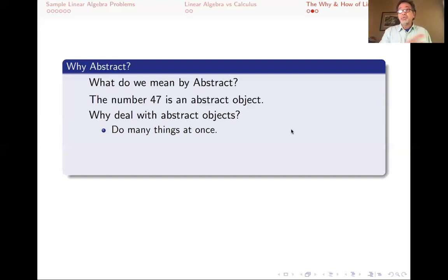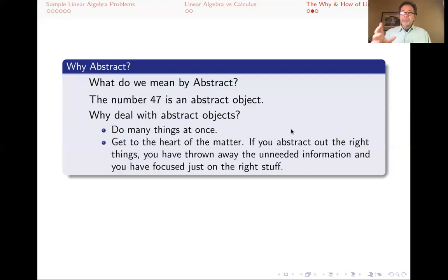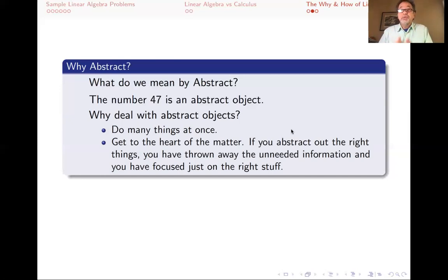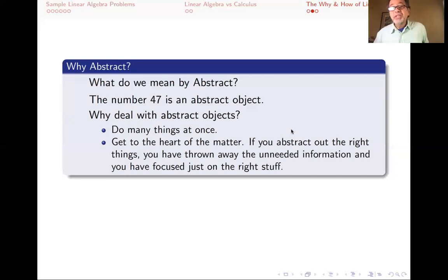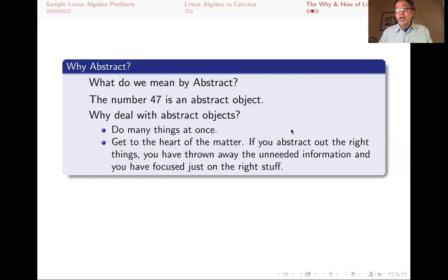Abstraction allows you to do lots of things at once — it's efficient in that way. More importantly, it gets to the heart of the matter. If you do the right abstraction for your problem, you're getting rid of extra information — the information you don't need — and because of that you can focus on the right stuff, the stuff that you need to solve your problem. If all you need to know is how many cows there are, then you really just want to know 47 plus 3.